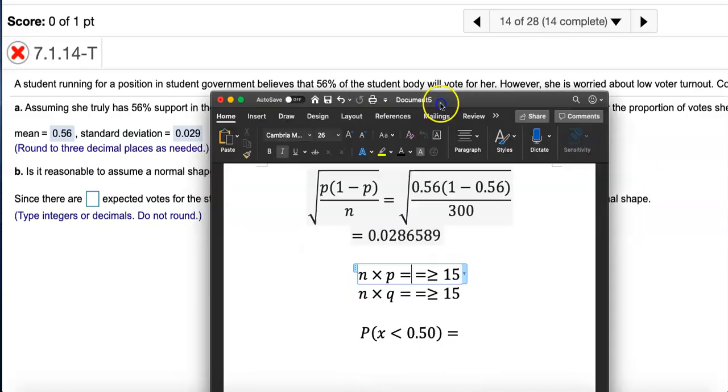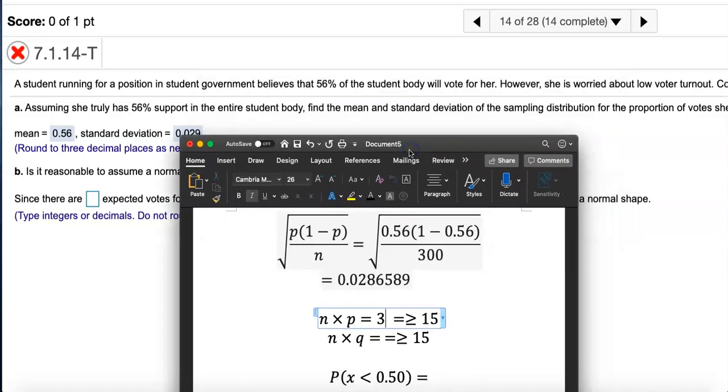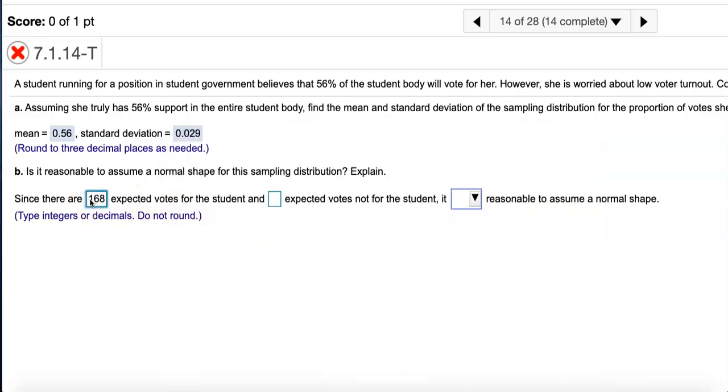Let's try to find the number of successes, in this case the expected vote for this student. How many people out of 300? The proportion was 0.56 for mine, so if I multiply 300 times 0.56, I'm expecting about 168 people to vote for this student, and that number 168 is definitely greater than or equal to 15.